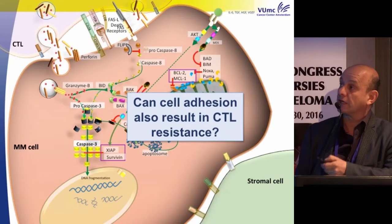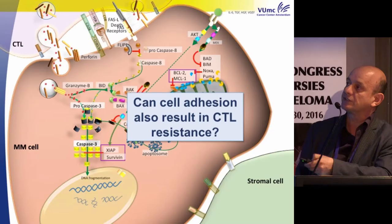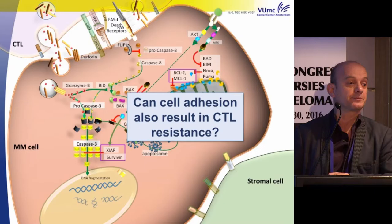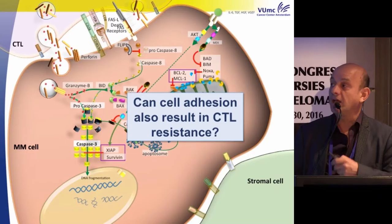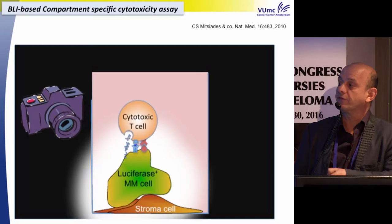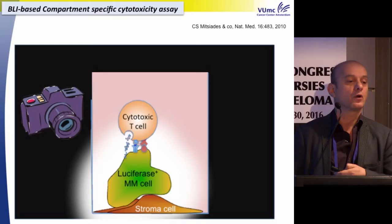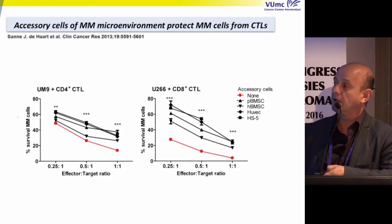Cytotoxic T-cells use mechanisms including death cell receptors and granzyme B, ultimately converging on caspase-3 — the same apoptotic pathways. So the question is: can cell adhesion also induce cytotoxic T-cell resistance? To answer this, we used a simple system with cytotoxic T-cells, luciferase-positive myeloma cells, and stromal cells — with or without stroma — to analyze whether the microenvironment influences these cells.